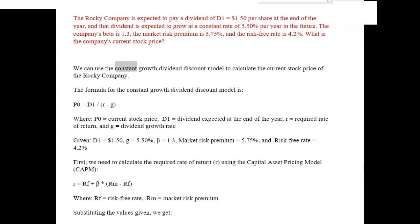We can use the constant growth dividend discount model to calculate the current stock price of the Rocky Company. The formula for the constant growth dividend discount model is P0 equals D1 slash (R minus G). Where P0 equals current stock price, D1 equals dividend expected at the end of the year, R equals required rate of return, and G equals dividend growth rate.